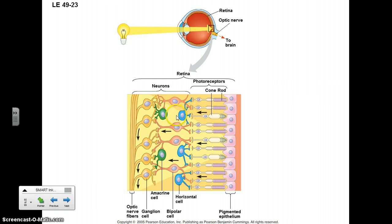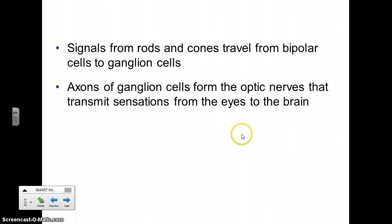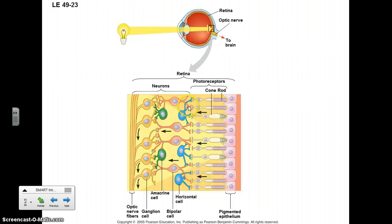In between there are horizontal cells and amacrine cells. Horizontal cells connect different photoreceptors, while amacrine cells connect different nerve cells in this part of the retina. They can integrate information across the retina. The signal travels to the ganglion cells and then to the nerve cells, which can be passed along via these horizontal or amacrine cells.